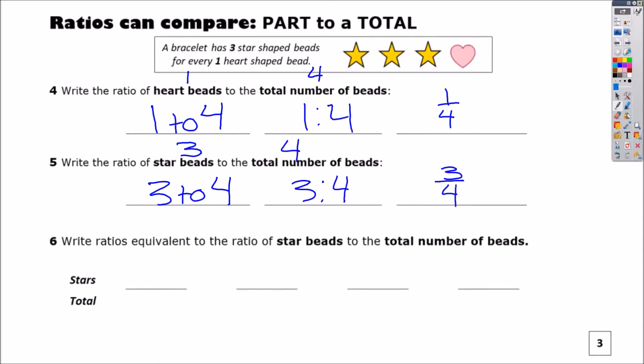If you want to try five and six and pause the video, I think that's a great idea. Write the ratio of stars to the total. Three to four. Three colon four, and three fourths. And for number six, it says write ratios equivalent to the ratio of stars to the total number of beads. So we're starting with three fourths. Let's keep going. Six eighths, nine twelfths, and twelve sixteenths.